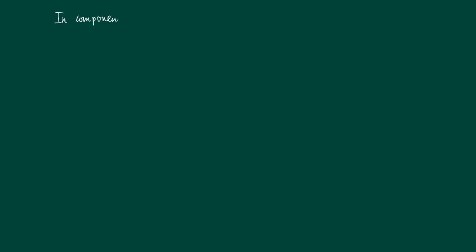We can write it in components. We have a vector (x, y) equaling a vector (1, 3) plus t times the direction vector (1, -2). Writing it in components: x equals 1 plus t, and y equals 3 minus 2t. Here t is called the parameter for the line.